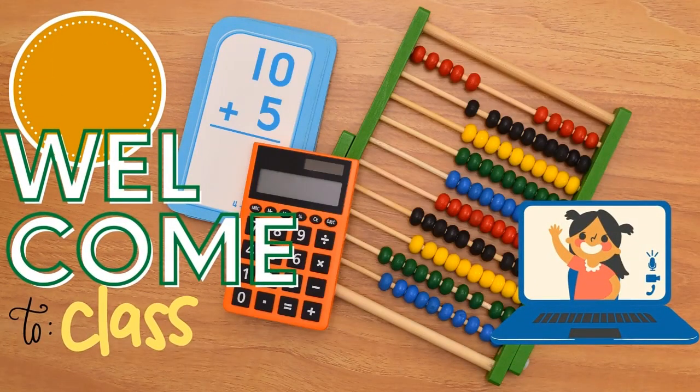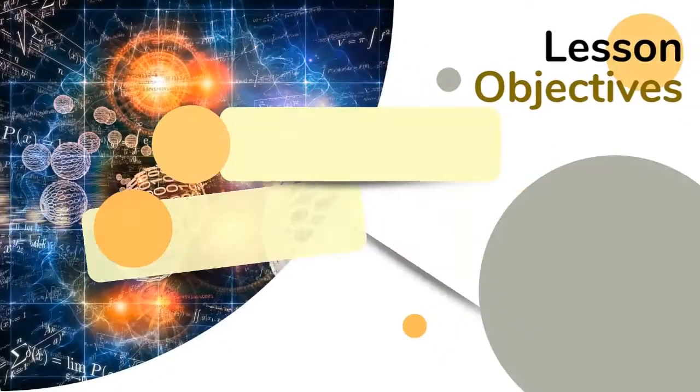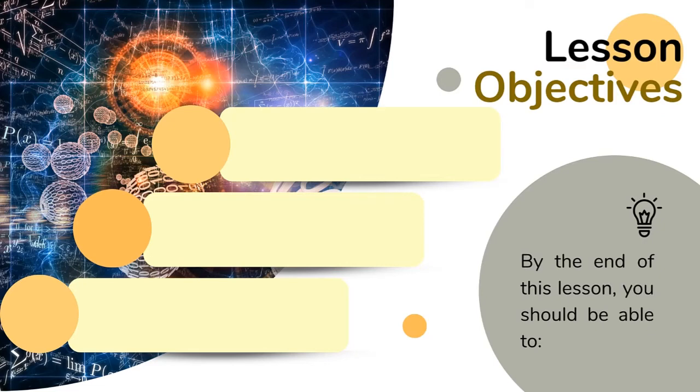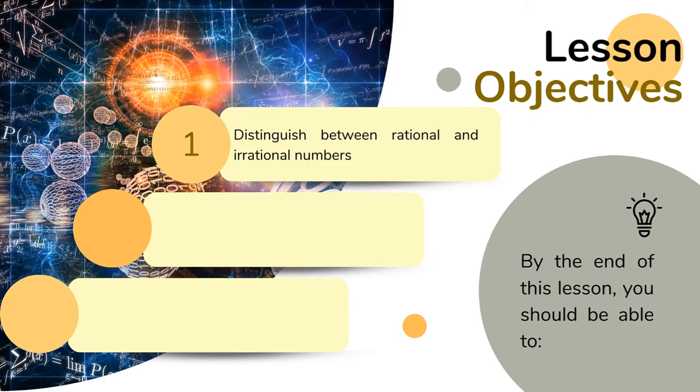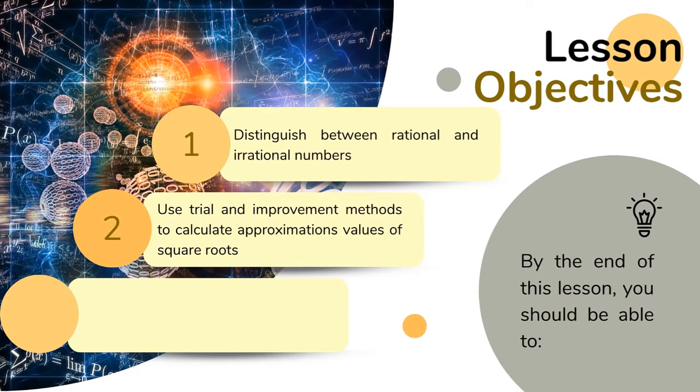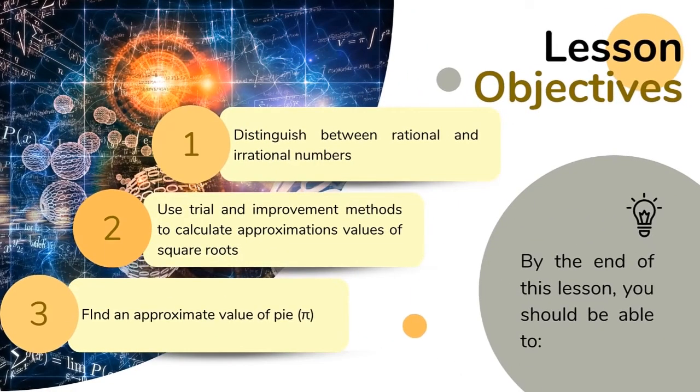Welcome to class. Today we are going to be looking at rational and irrational numbers. At the end of this lesson, you should be able to distinguish between rational and irrational numbers, use trial and improvement methods to calculate approximate values of square roots, and find an approximate value of pi.